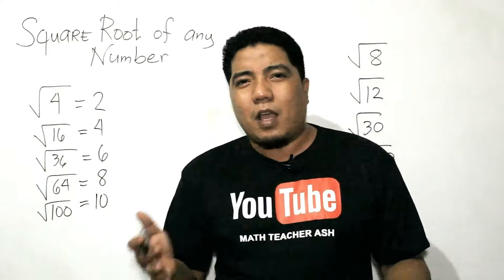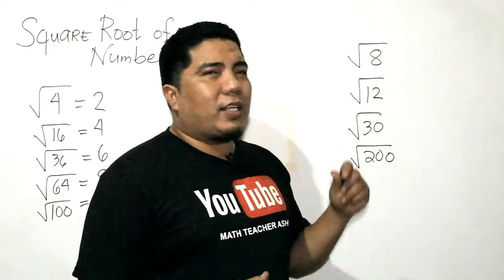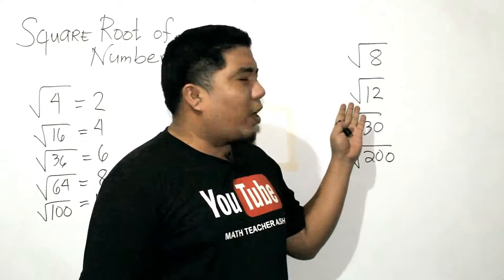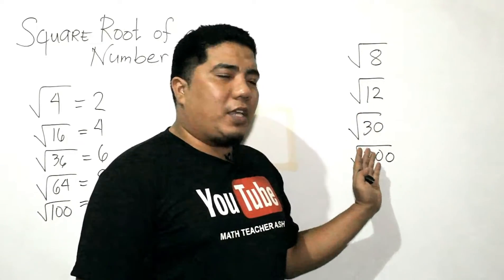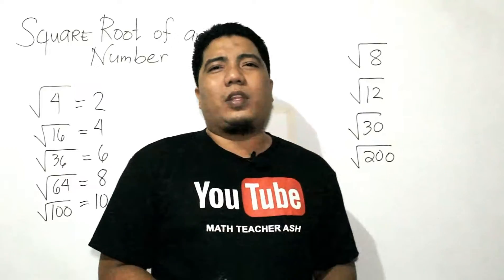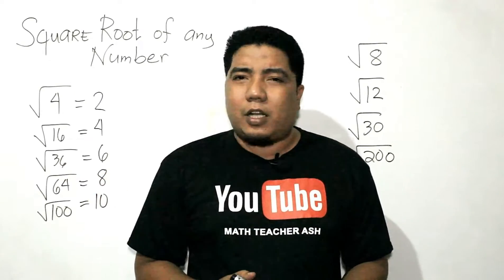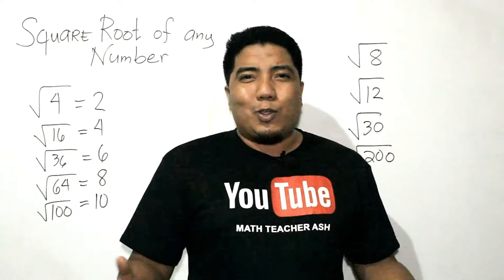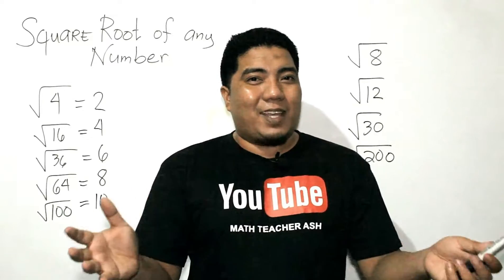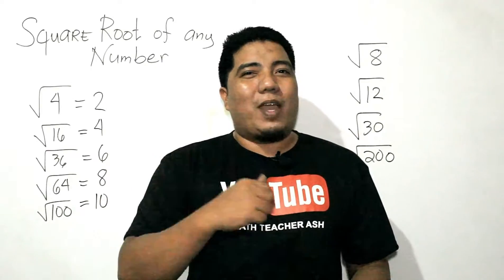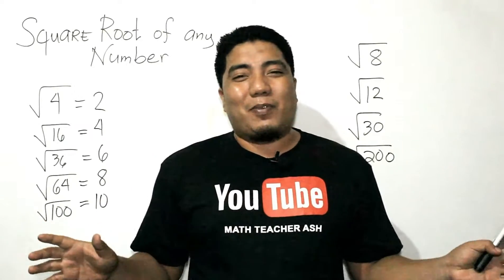That's easy. However, what is the square root of 8? Square root of 12? Square root of 30? Square root of 200? These numbers are not perfect squares. So, do you want to know the secret and the math trick behind it? Well, finish this video and I will teach you how.